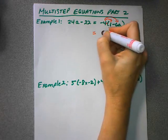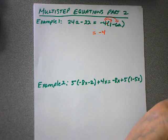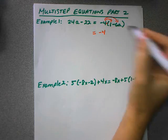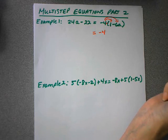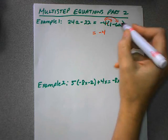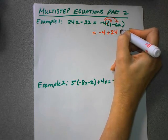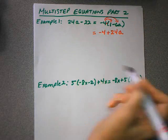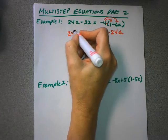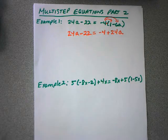And what that is going to give us is a negative 4 times 1, which is negative 4. And then when I do a negative 4 times negative 6, a negative times a negative is positive. So that is going to be a positive 24a. The left side we just leave the way it is, 24a minus 22.